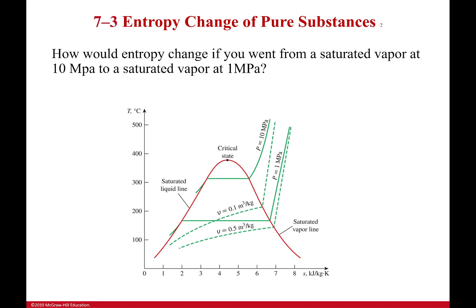One last detail here is remember our constant pressure lines. There's a constant pressure line, there's a second constant pressure line. I also have some constant specific volume lines. We're not going to worry about those too much. But here's my question for you: how would entropy change if you went from a saturated vapor at 10 megapascals to saturated vapor at 1 megapascal?